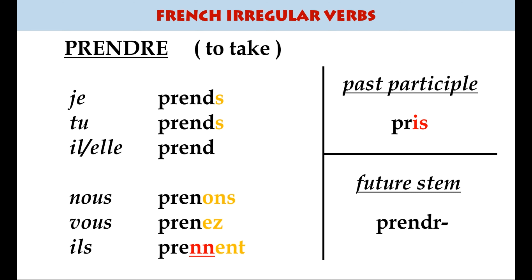The next verb is prendre. In the present tense it looks a little like an re verb — that's the infinitive ending — but it drops the d right the way through to the end, doubles the n in the ils form, and the past participle is irregular: pris.